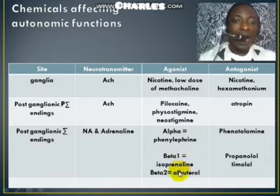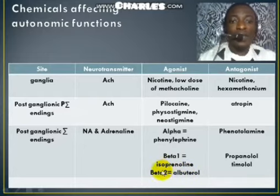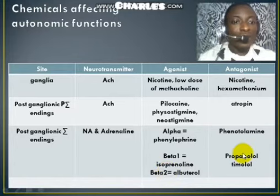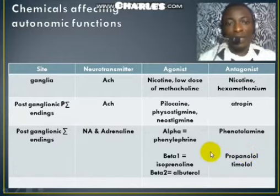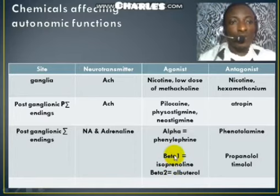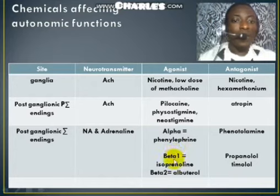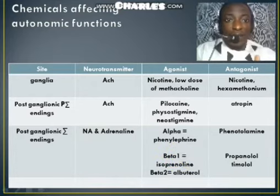For the beta receptors, isoprenaline can stimulate the beta-1 receptors, whereas albuterol stimulates specifically the beta-2 receptors. The antagonists or inhibitors of these beta receptors are propranolol and timolol. These agents or drugs can actually inhibit these beta receptors from functioning, preventing adrenaline or noradrenaline from binding to the beta-1 and beta-2 receptors.